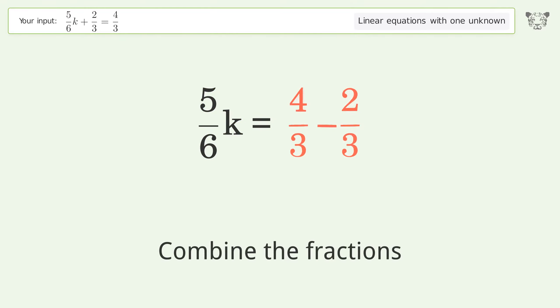Isolate the k. Multiply both sides by inverse fraction 6 over 5. Group like terms. Multiply the coefficients.